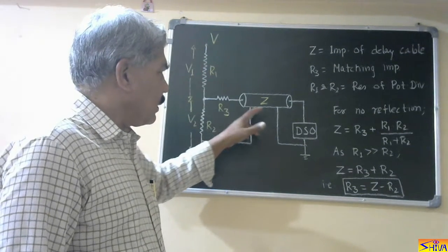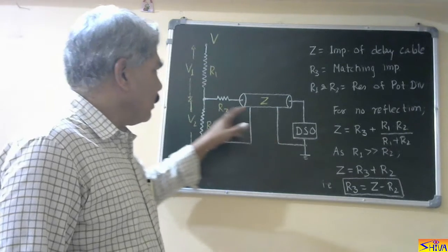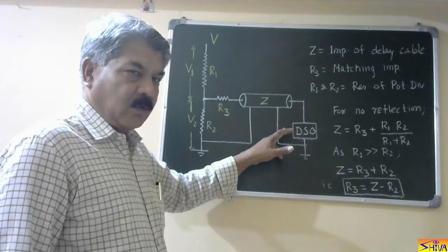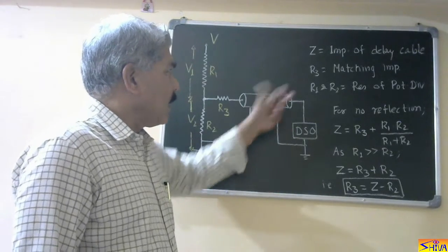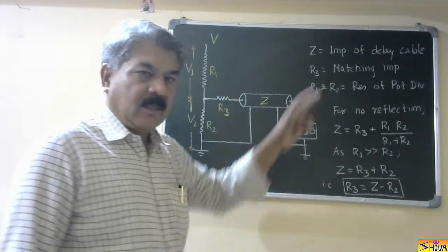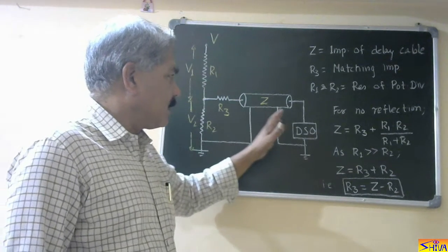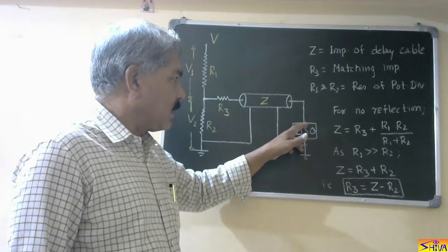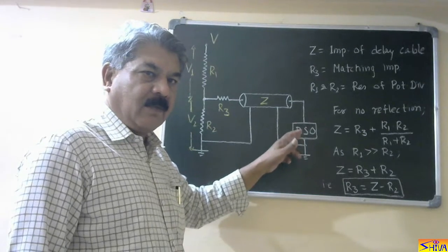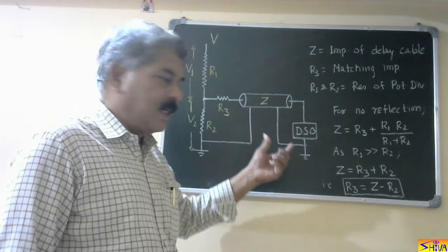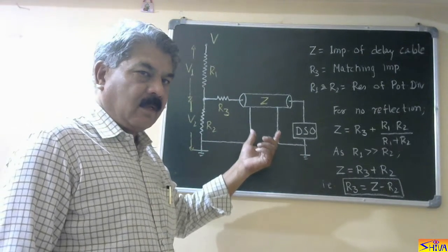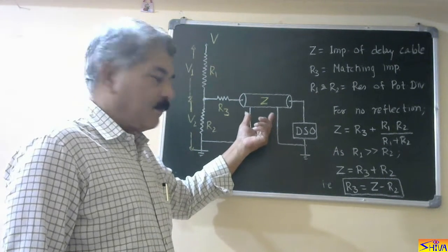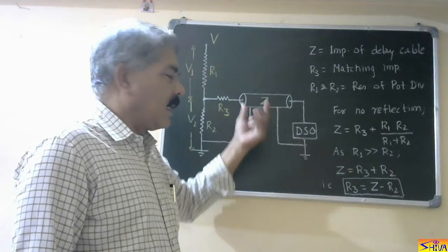So, we have to use a delay cable to take the sample of the voltage from this potential divider up to the digital storage oscilloscope. This delay cable, having impedance Z, serves two purposes. First is, it slightly delays the arrival of this transient over-voltage to the DSO, so that the DSO becomes ready for accepting this voltage. And second, it avoids electromagnetic interference, which may cause distortion in the waveform.